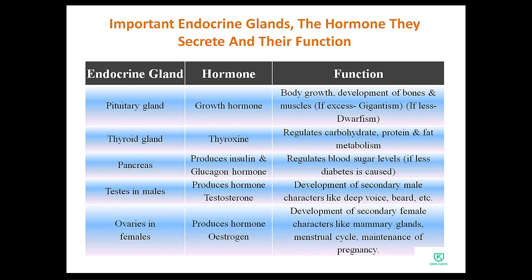The third endocrine gland is the pancreas. It releases two hormones: insulin and glucagon. Their function is to regulate blood sugar levels. When blood glucose levels are high, insulin is secreted by the pancreas to bring them down to normal. Glucagon works in the opposite way to maintain blood sugar levels.